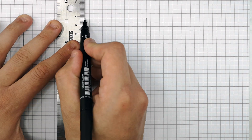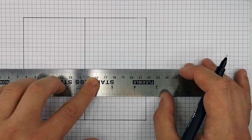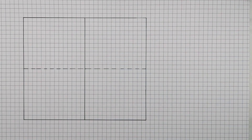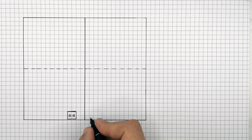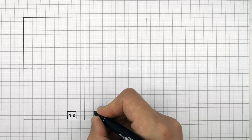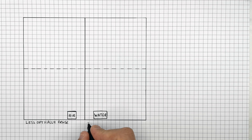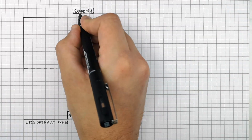This is the boundary between two materials, and this is the normal line, 90 degrees to the boundary. This side of the boundary is air — a less optically dense material — and this side is water, which is more optically dense. Air is less optically dense and water is more optically dense.